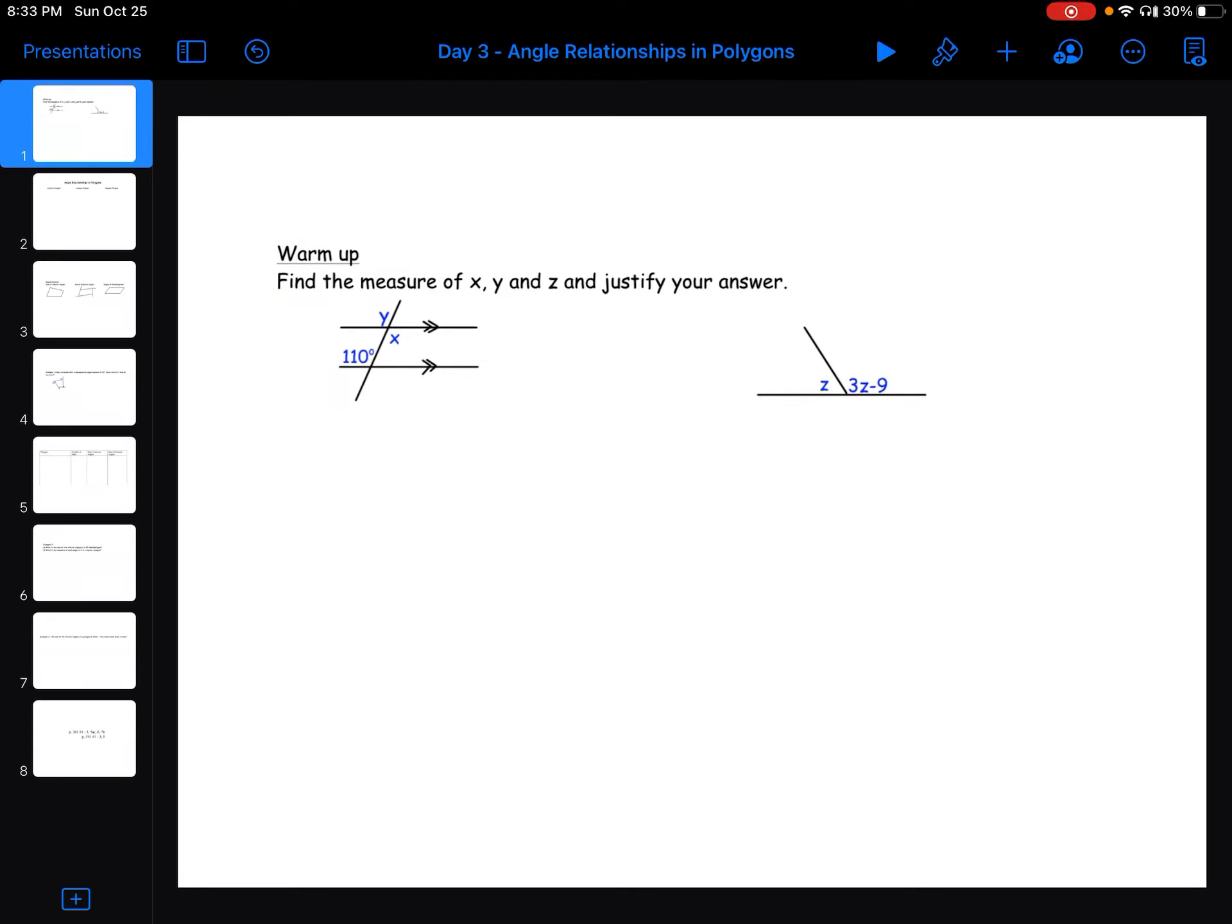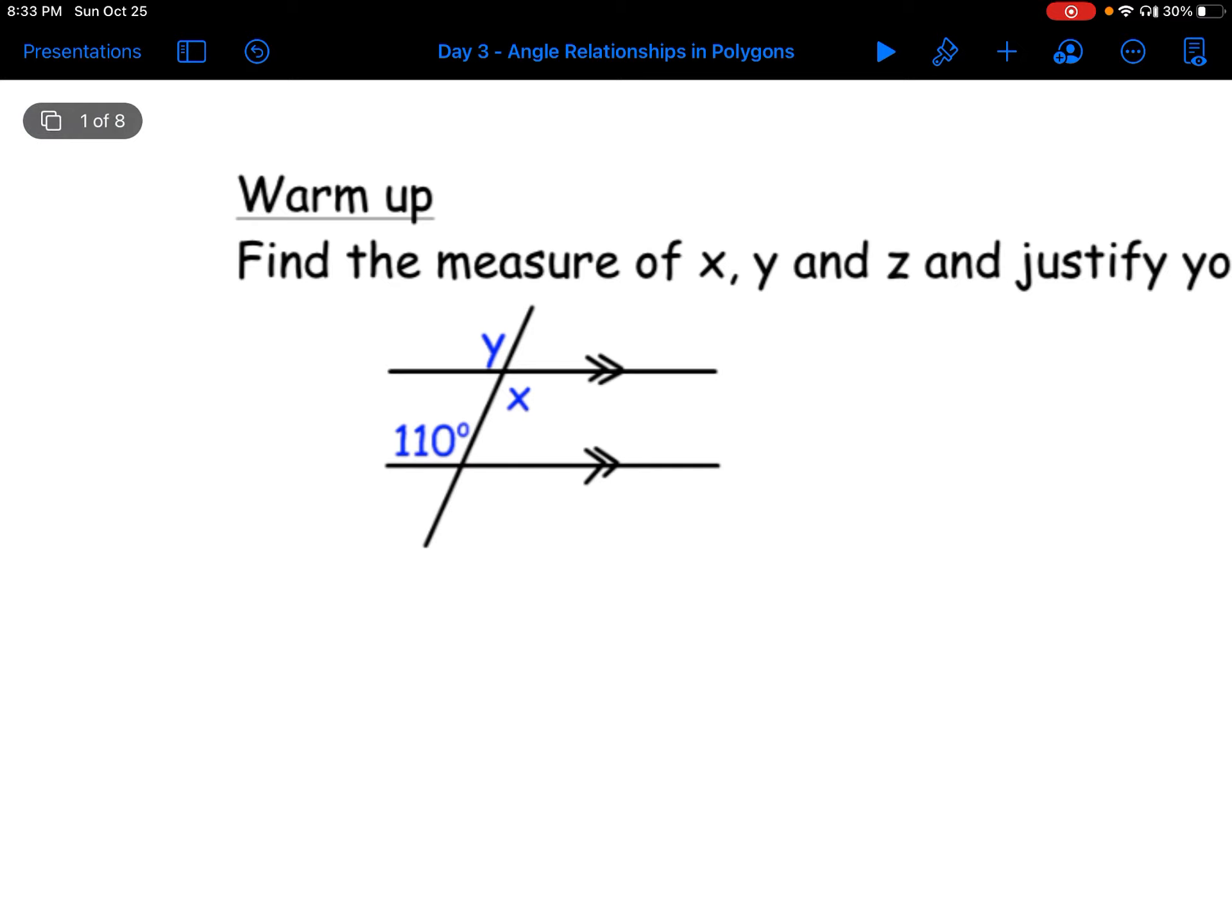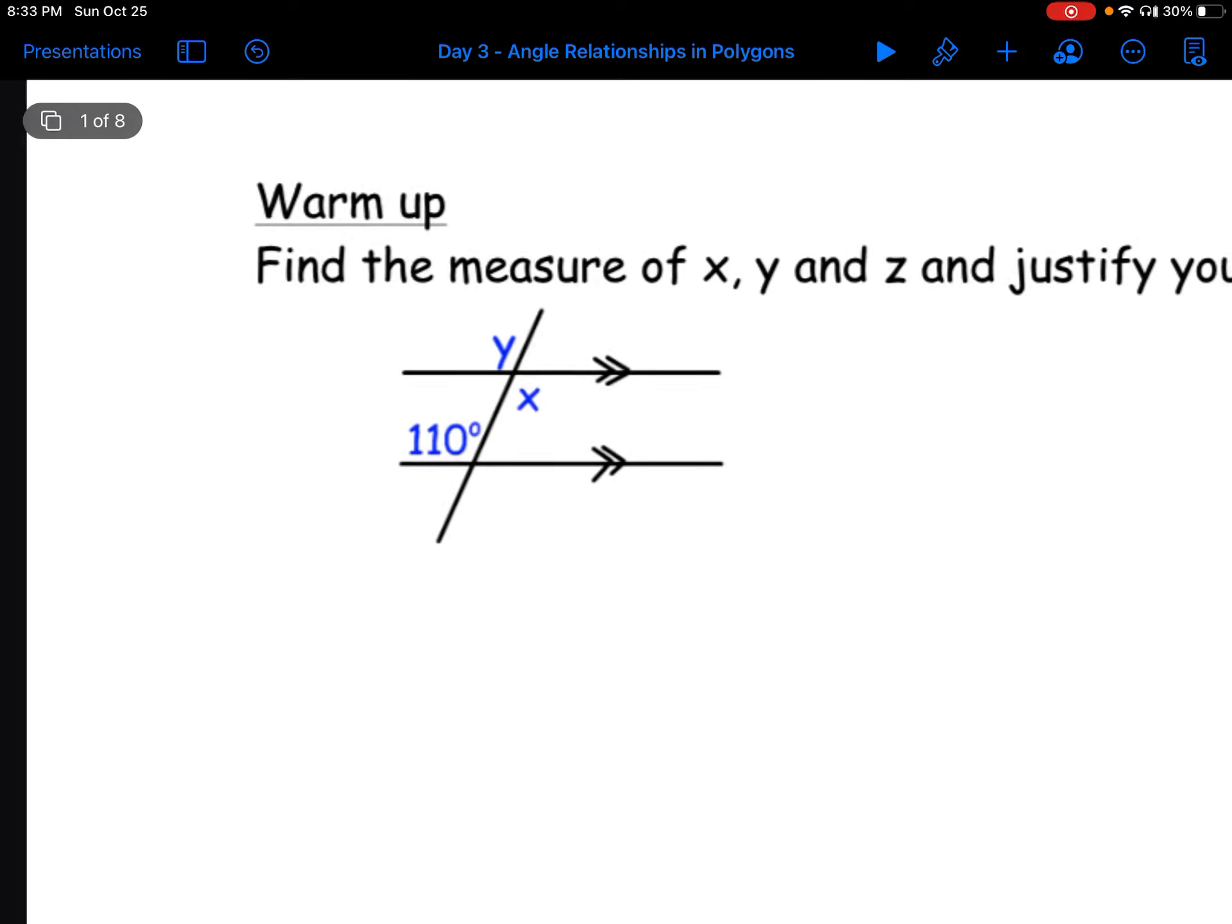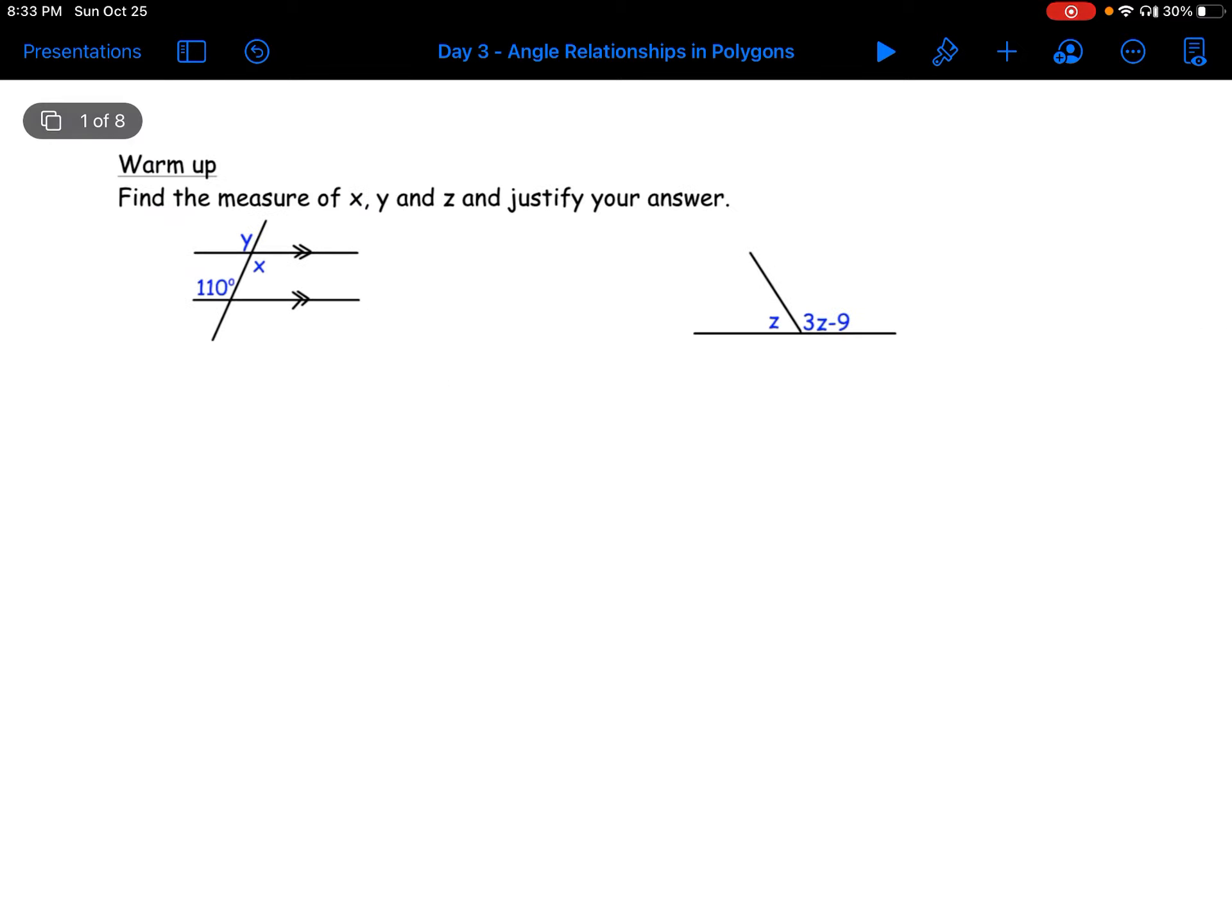Okay, so we're going to look at angle relationships and polygons again today. First, let's just start out with this. So we talked about this briefly last day. We have three different distinct patterns with parallel lines. So what I'm going to do is we're actually going to, I'll deal with the second example first.